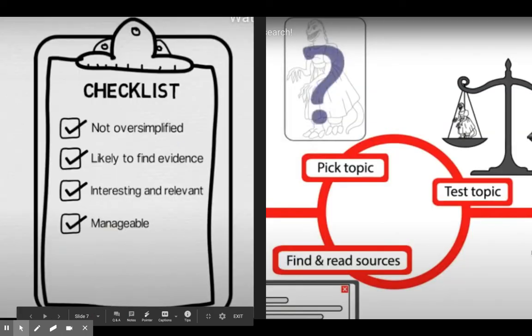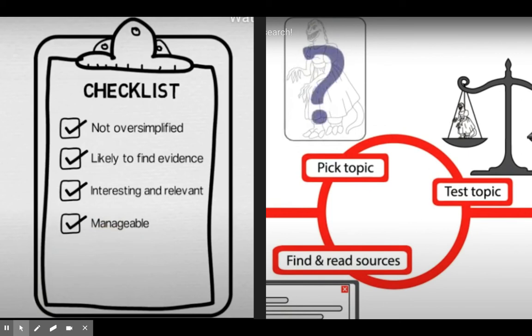So from those two videos, some of the important takeaways are that it's an iterative process — you can't hold on to that same question. And also this checklist: thinking about the fact that it can't be oversimplified, you need to be able to find evidence whether that's statistical, anecdotal, or scientific evidence, it needs to be interesting and relevant to you, and also something that's manageable. Remember that you do have two months to write this research paper, but it might take you a week just to nail down a workable starting point for your research question.